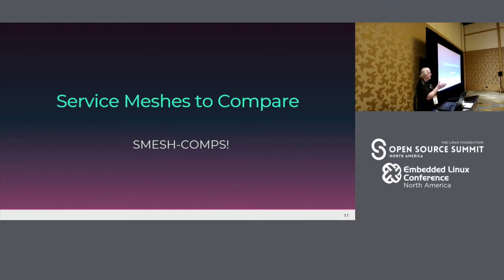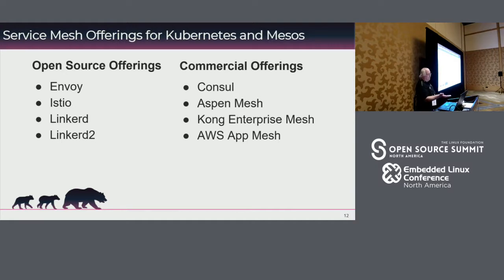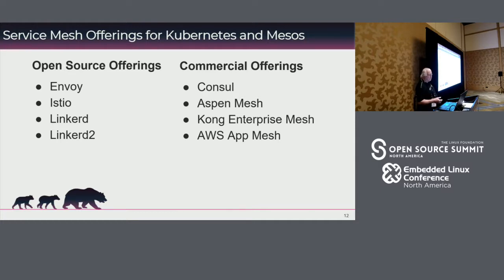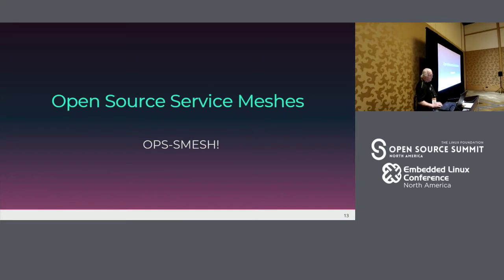Now we're going to do some comparisons of those three architectures — I affectionately call that Schmesh Comp. There are four open source and four commercial offerings here. On the left-hand side are those supplied by the open source community — no corporate entity you license from. On the right-hand side are licensed versions of those products, typically called community and enterprise versions. The only one that steps out of that boundary is AWS App Mesh, which is really intended to lock people into AWS.